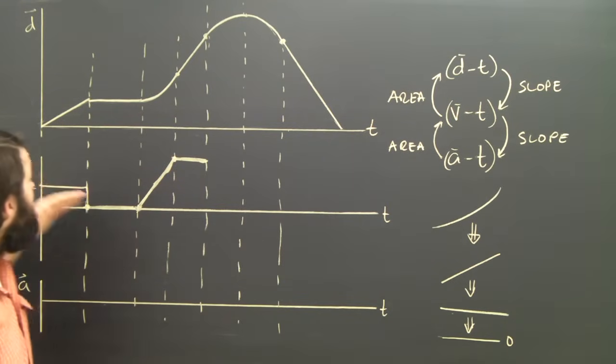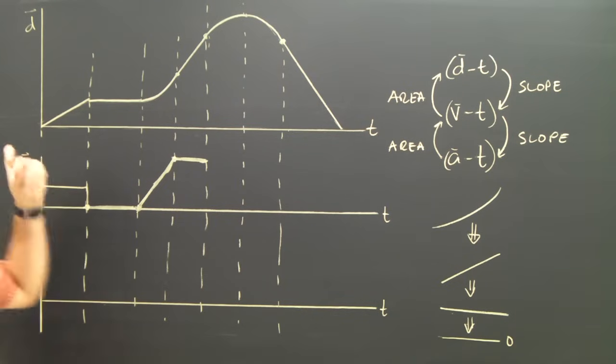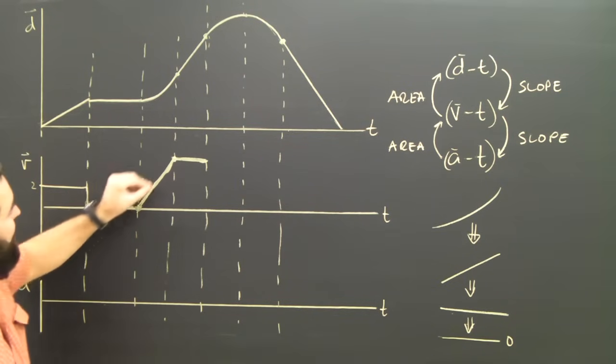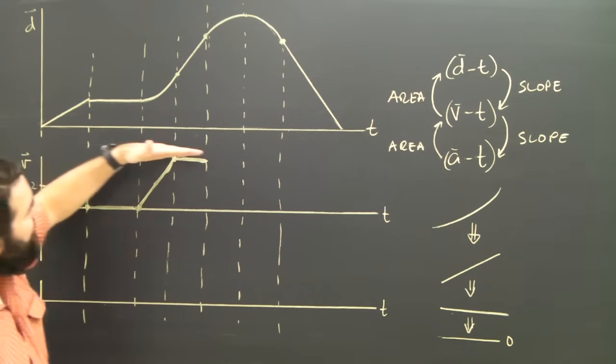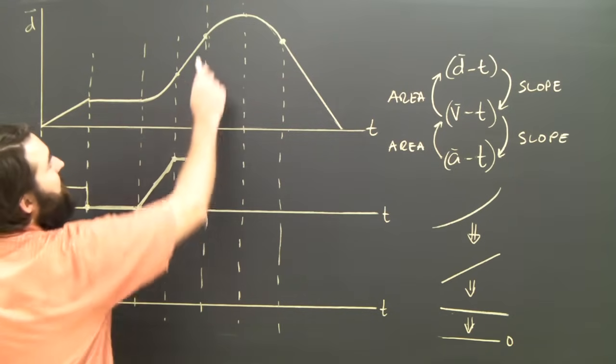So I'll just connect those two. So far, so good. The velocity was constant. Then the velocity was zero, all of a sudden, which is weird. Then the velocity increased to about four, and it stayed there for a while.